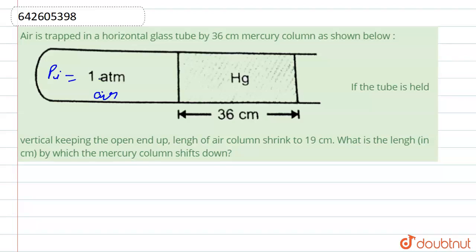air. Its initial pressure is 1 atm. Here it is column of mercury and its length is given 36 centimeter.